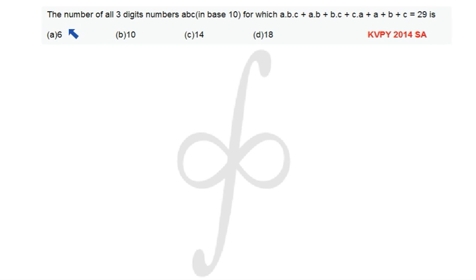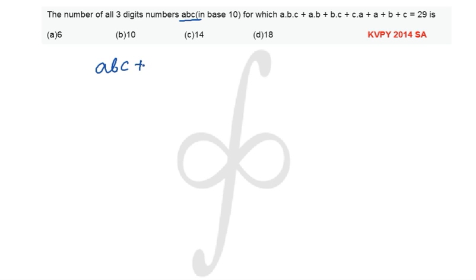Let's discuss a question which appeared in KBPY 2014 under the stream essay. The question is: find the number of all three-digit numbers ABC in base 10 for which ABC + AB + BC + CA + A + B + C = 29. Options are given. Now this is a tricky one — ABC is a three-digit number, so A, B, C are single-digit whole numbers.